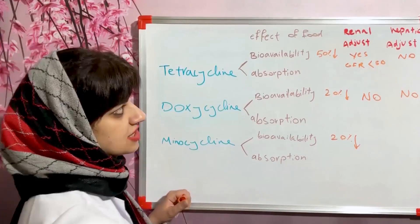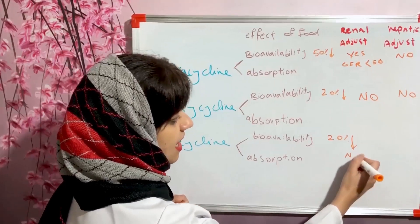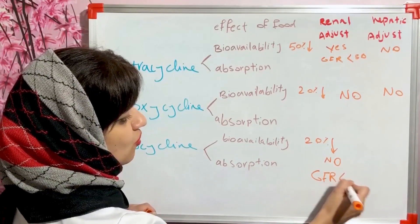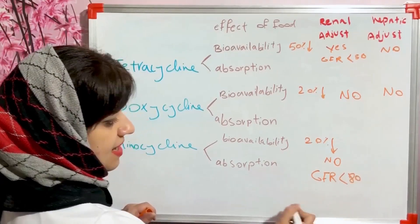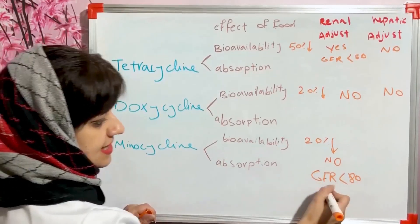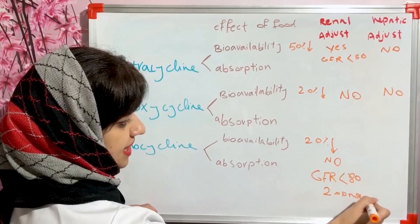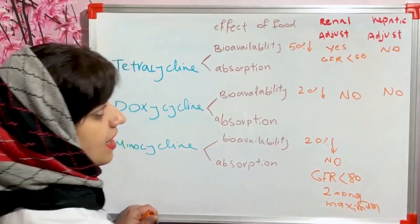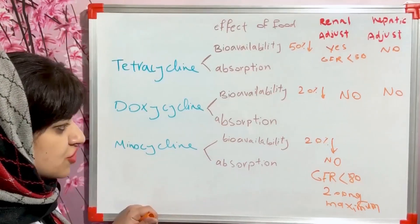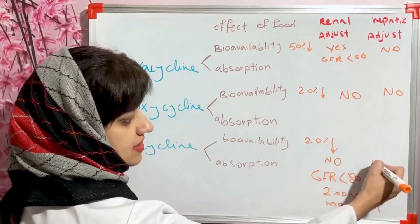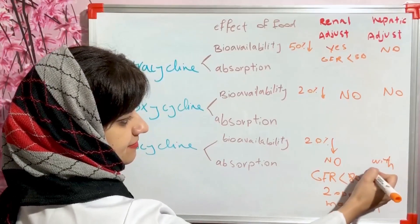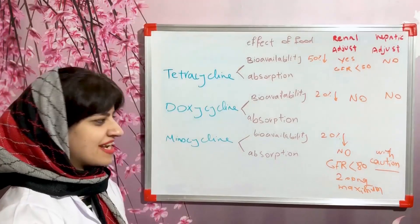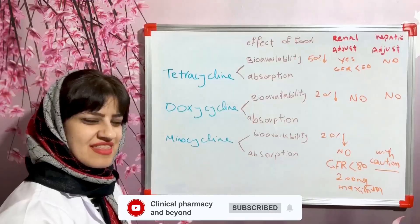Minocycline does not need any renal adjustment. However, in GFRs lower than 80, the maximum dose should not exceed 200 milligrams. In hepatic failure, minocycline should be administered with caution. I hope you enjoyed this video. Please like, subscribe, and share. Thanks.